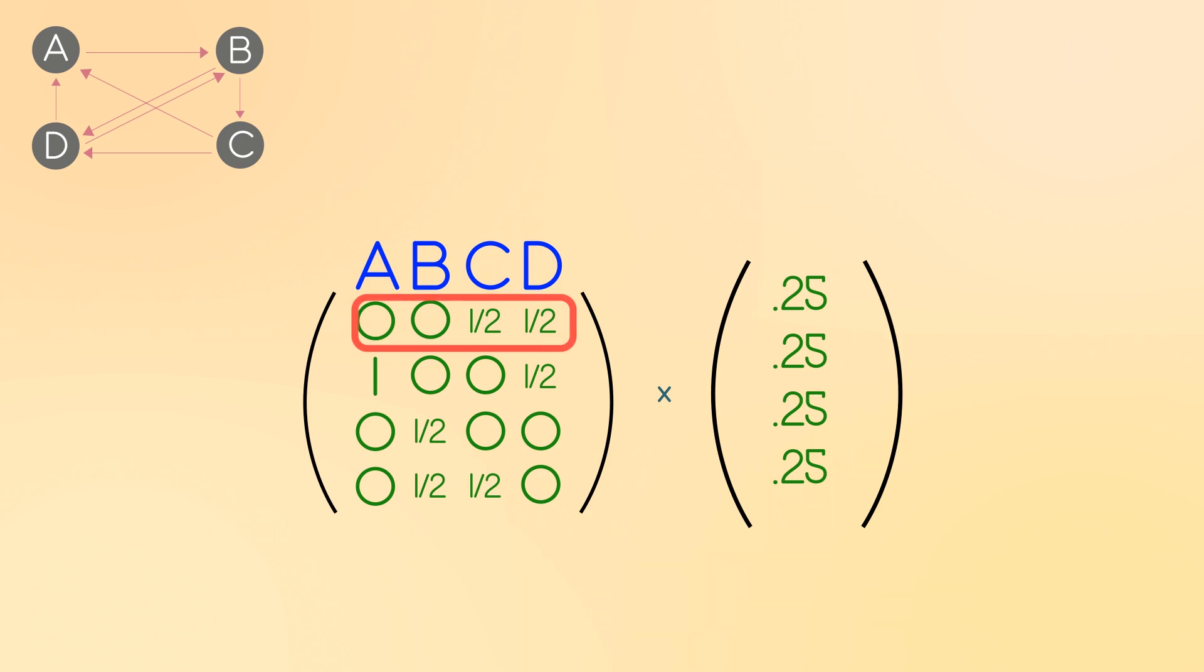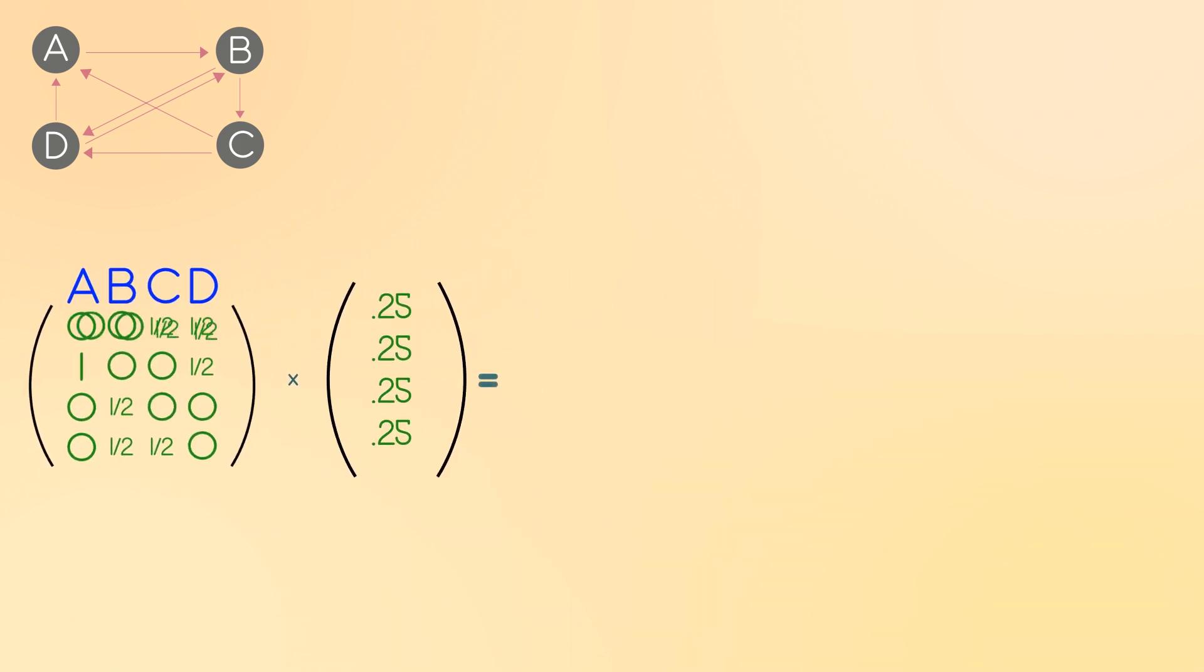Remember, this first row is all the points given to site A, or the chances of getting to A from any given site. So this dot product tells you the probability of being at A after one click. Think about it. This says you have a 25% chance of starting at A times a 0% chance of going to A from there, since it doesn't link to itself. When you start at B, same initial probability, there's also no chance of going to A because there's no link.